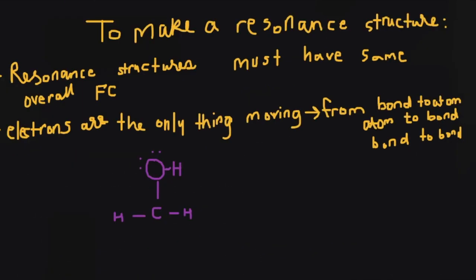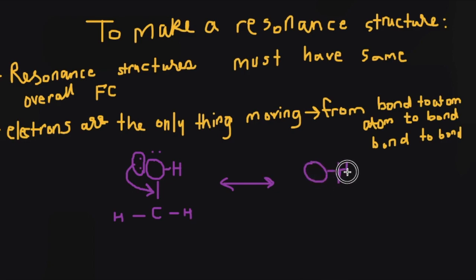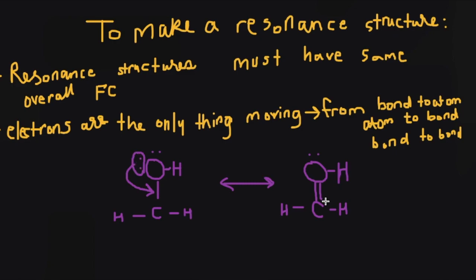Let's look at an example of making a resonance structure from this shape. The first thing we see is that there are lone pairs of electrons on the oxygen. Therefore we can move these electrons to a different location to make a resonance structure. I'm going to move them onto this bond between oxygen and carbon. Usually we don't take electron pairs and jump them across the shape, so it would not be common to move them far away. The resulting shape has oxygen with its lone pair of electrons and the bond it already had with carbon, plus an added bond using the electrons we moved — everything else is the same. We just did atom-to-bond electron movement.